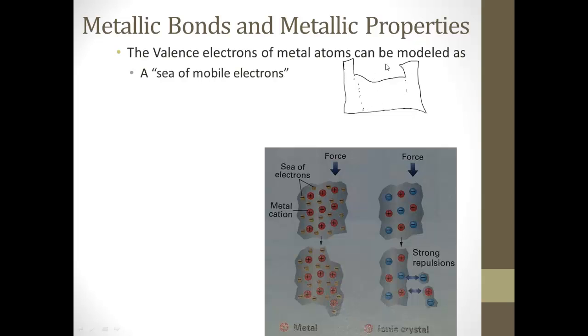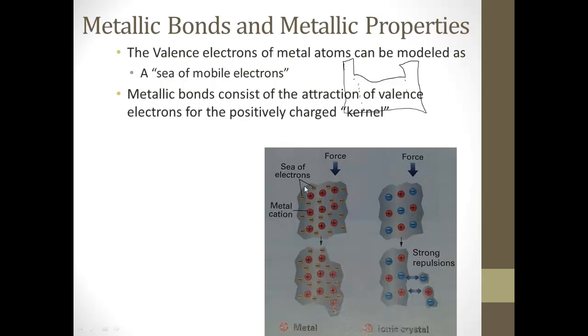And since all of these, the outermost shell just has those two S electrons, those outer shell S electrons are mobile. And these metallic bonds consist of the attraction of valence electrons, those two S outer shell electrons, for the positively charged kernel.